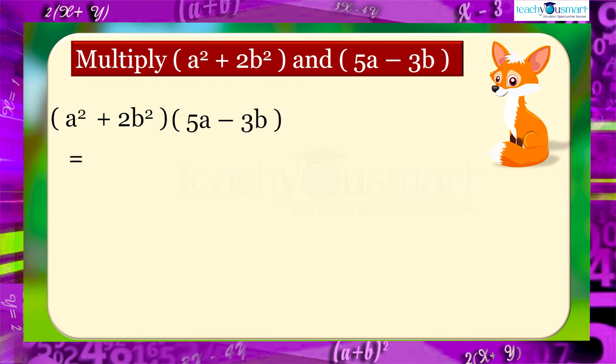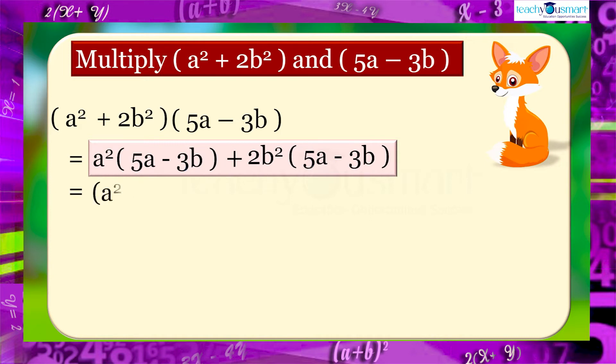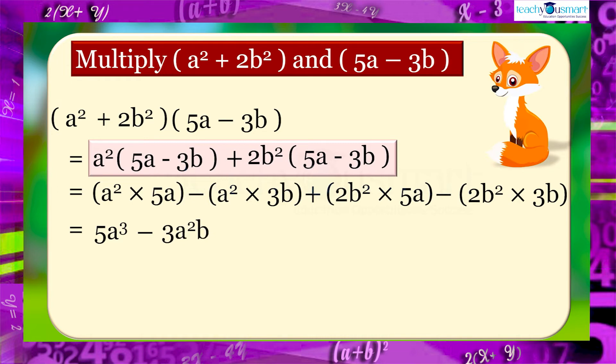(a² + 2b²) multiplied by (5a - 3b) equals a² multiplied by (5a - 3b) plus 2b² multiplied by (5a - 3b) equals a² × 5a + a² × (-3b) + 2b² × 5a + 2b² × (-3b) equals 5a³ - 3a²b + 10ab² - 6b³. There are no like terms.